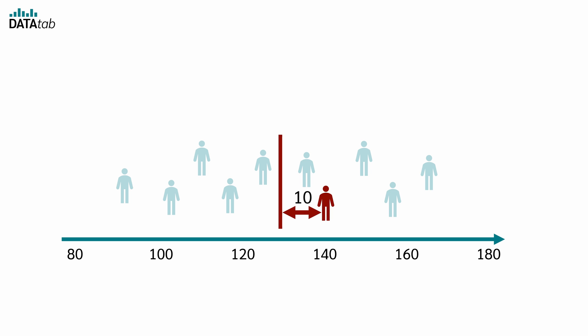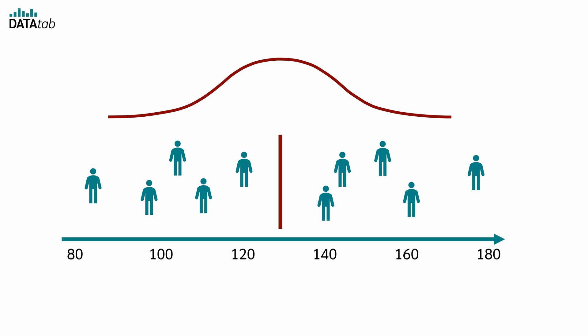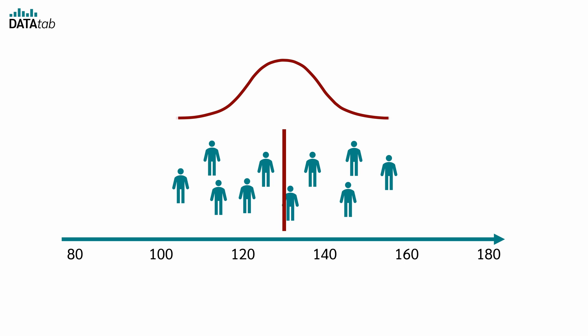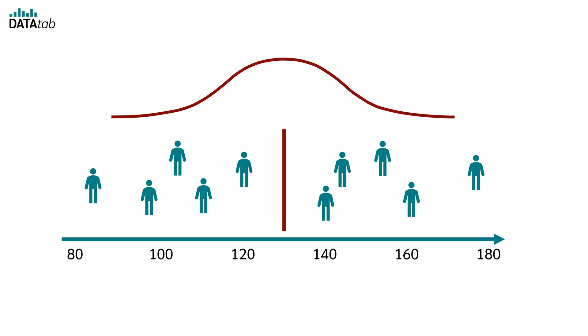If the other patients scatter very closely around the mean, then 10 is a lot in relation to the scatter. But if the other patients scatter very strongly around the mean, then 10 may not be so much. The standard deviation tells us how much the data is scattered. If the data is close to the mean, we have a small standard deviation. If it is highly scattered, we have a large standard deviation.